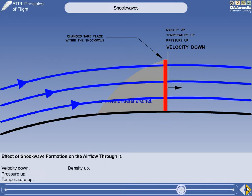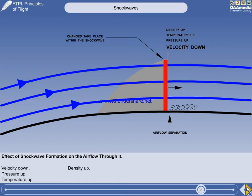A further effect is that the airflow will begin to separate from immediately behind the shockwave. At speeds just above Mcrit, this is not a problem. But as Mach number increases, it will start to become a limiting factor to further acceleration.